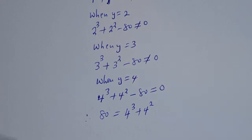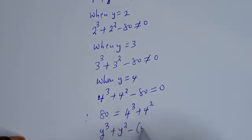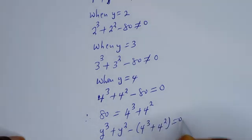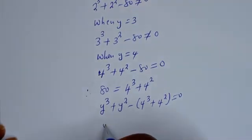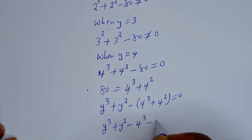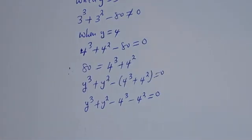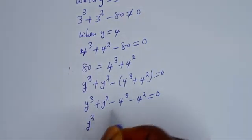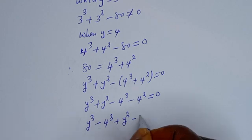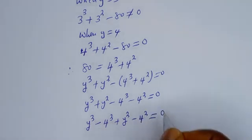Let's substitute. We have Y cubed minus 4 cubed plus Y squared minus 4 squared is equal to 0.